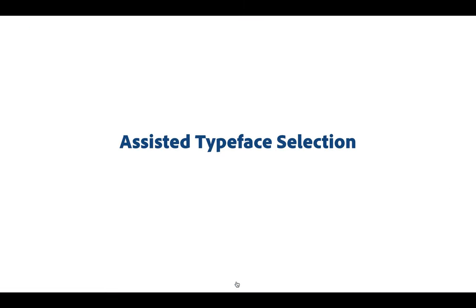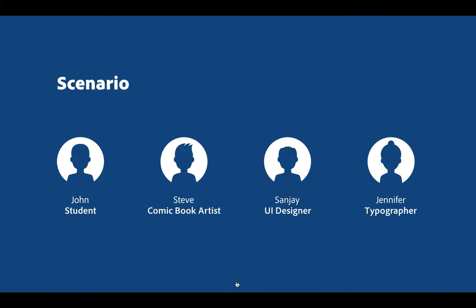We have come up with an approach called Assisted Typeface Selection, which can assist different kinds of users with typeface selection. I'll explain four different scenarios showing how designers use this system to search, explore, browse, and select typefaces.